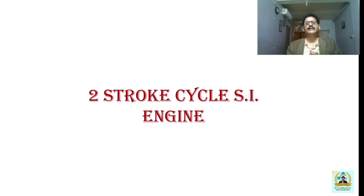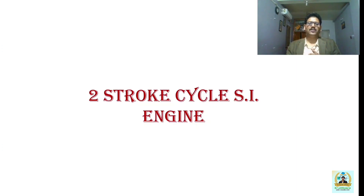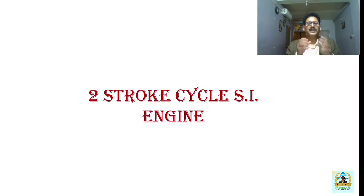I will explain why it is called a two-stroke cycle spark ignition engine, then discuss the different engine components, give a brief idea about engine nomenclature, explain how the four-stroke cycle engine works so you can compare it with the two-stroke cycle engine, and then explain in detail the operation of a two-stroke cycle engine. Finally, we'll discuss the major advantages and disadvantages of the two-stroke cycle engine.